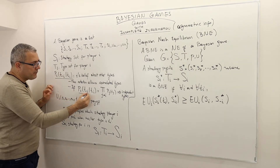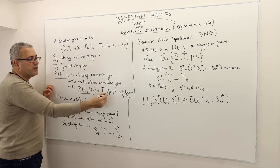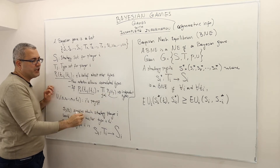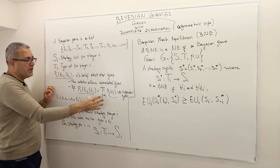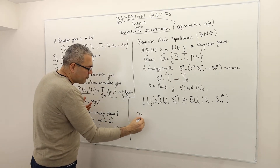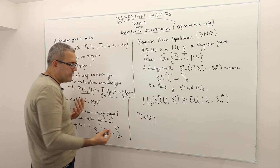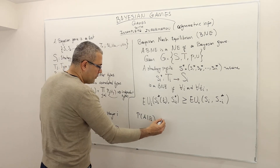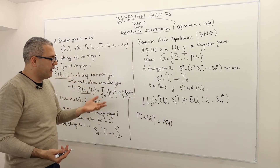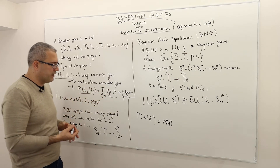If this probability is equal to the product of the individual type probabilities — Pj(Tj) for J different than I — that means independent types. If the probability of A given B is equal to the probability of A, then A and B are independent. This is exactly what's happening here.